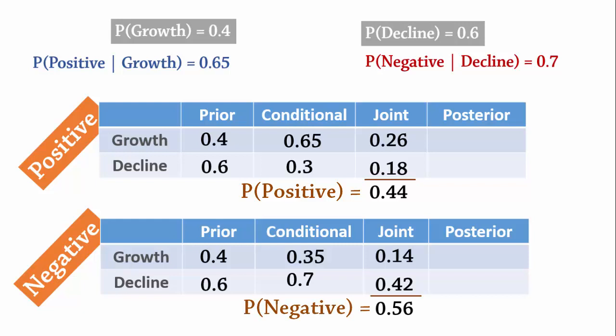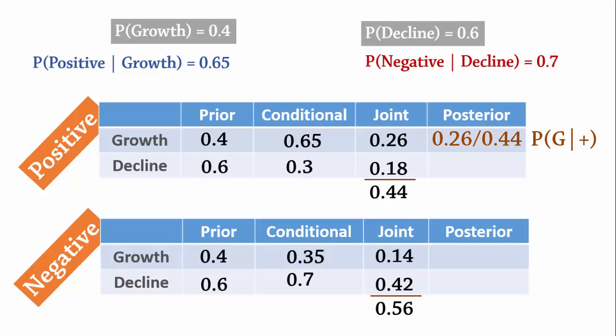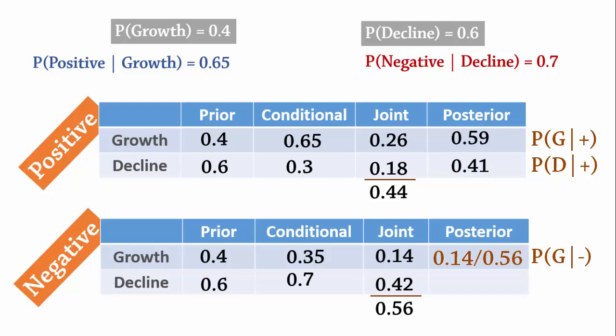Note that the probability of positive and negative report add up to 1. To obtain the posterior probabilities, we simply divide the joint probabilities by their total. So, probability of growth given positive is 0.26 divided by 0.44, which gives 0.59. For decline given positive, 0.18 divided by 0.44, which equals 0.41. In a similar fashion, we obtain the results for growth given negative and decline given negative. Notice that the posterior probabilities add up to 1.